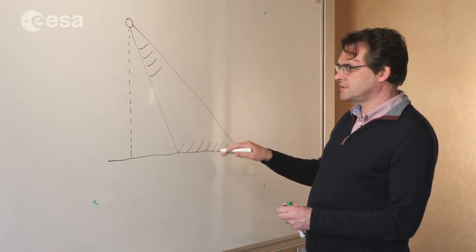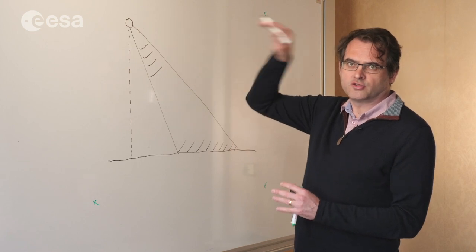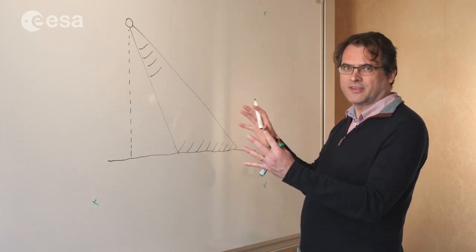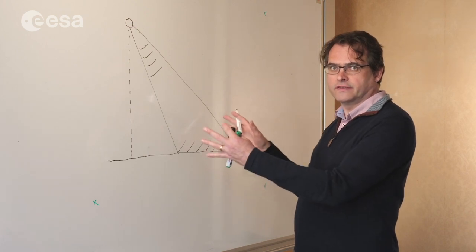In this case, this is the Earth's surface and our sensor is travelling into the board. We therefore talk about the azimuth direction as the direction of travel of the system.